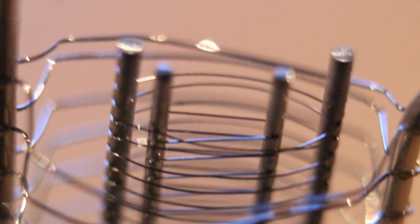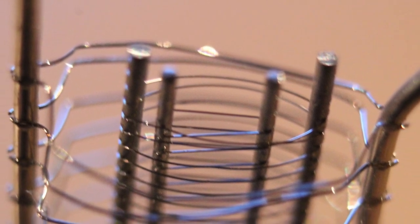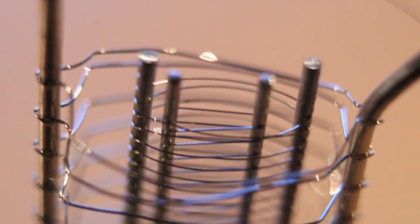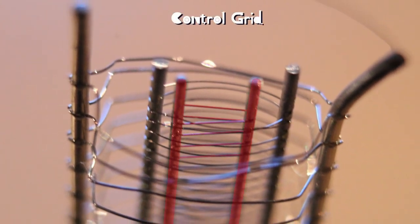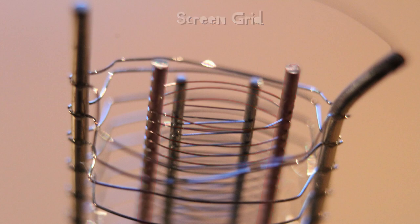But even though we can't see the filament we can see the three grids very clearly. Especially in this macro shot right here. This looks really cool. And so you can see that the control grid is the very tightly wound grid right in the center. And then very close to the control grid but not quite as tightly wound is the screen grid.